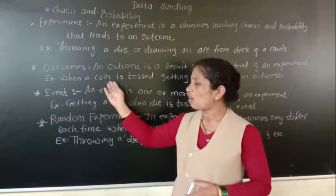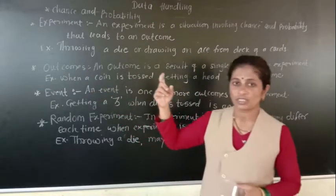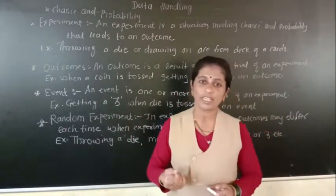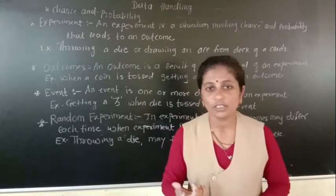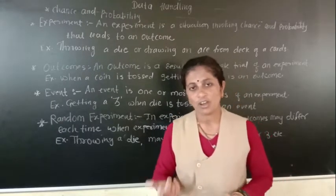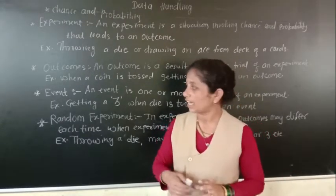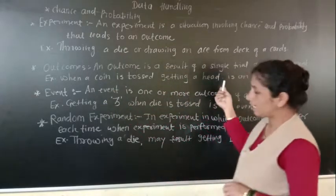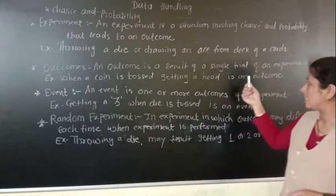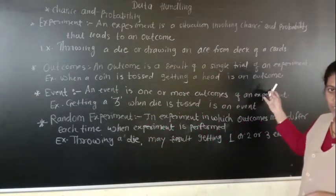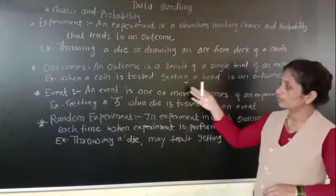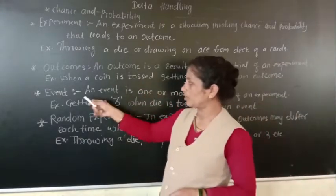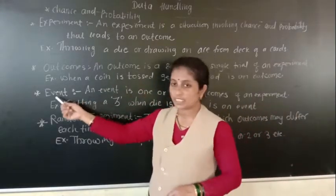For example, when a coin is tossed, you are doing an experiment. When the coin is tossed, either you will get head or either you will get tail. So getting a head is an outcome. If you want the head, and you get the head, that is the outcome. Next term is event.